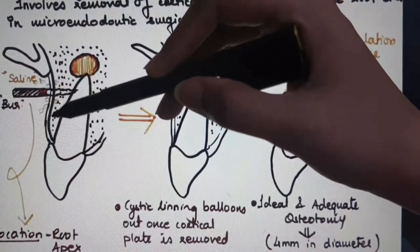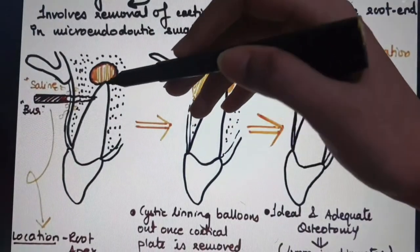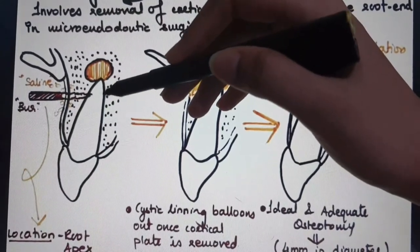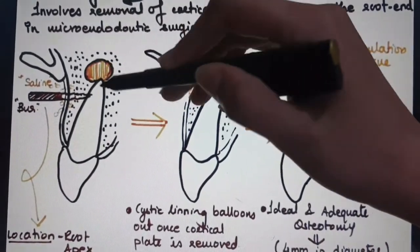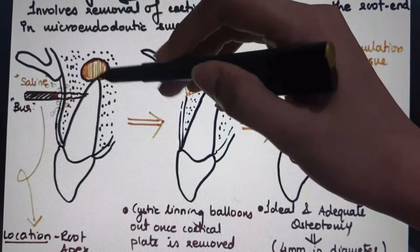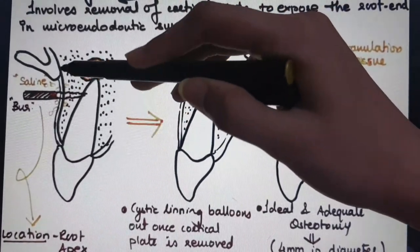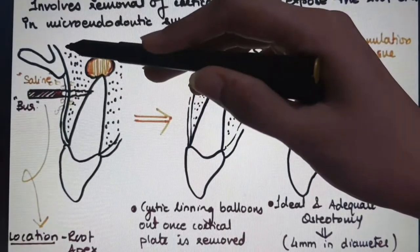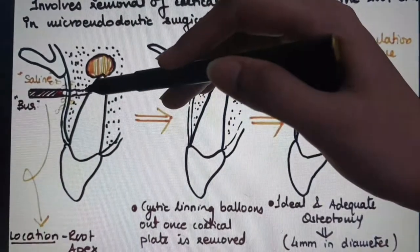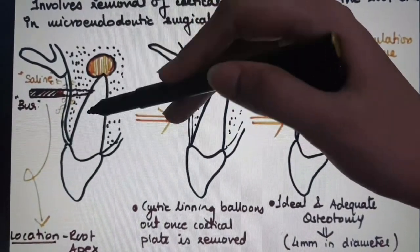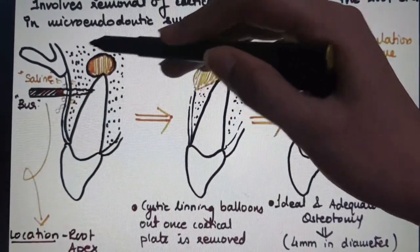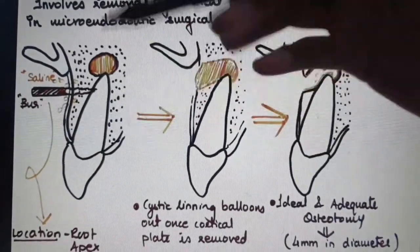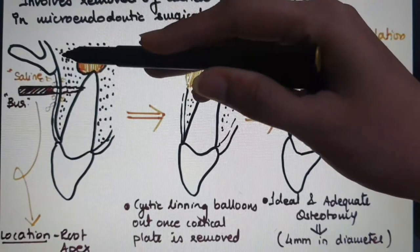In cases where a cyst is present, you first thin out the cortical plate and then enter. Once the cortical plate is thinned out, it can be peeled off leaving only the cystic lining visible.